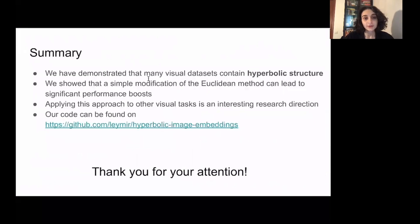To quickly summarize, we have shown that visual data is hyperbolic in some sense. We also showed how we can estimate a degree of hyperbolicity of the data, and we showed how a simple transition from Euclidean to hyperbolic space can boost the model performance. We also have released our code. You can find it on GitHub. Thank you for your attention.